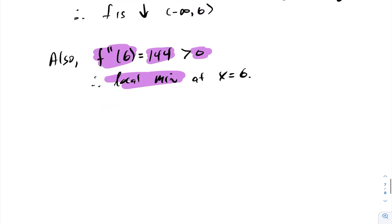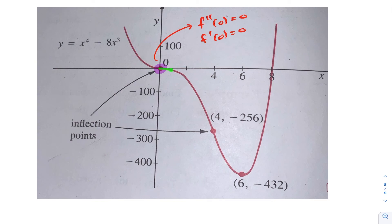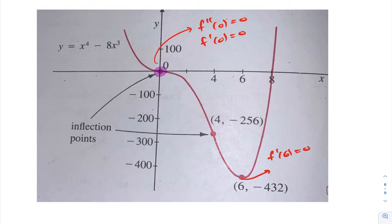Let's take a look at the graph. Here's a graph of the function we just discussed. Notice we have our inflection point at 0. At this point, f double prime at 0 equaled 0, and f prime at 0 was also 0. On the interval of f prime, the function was decreasing from negative infinity to 0, and decreasing again from 0 all the way to 6.